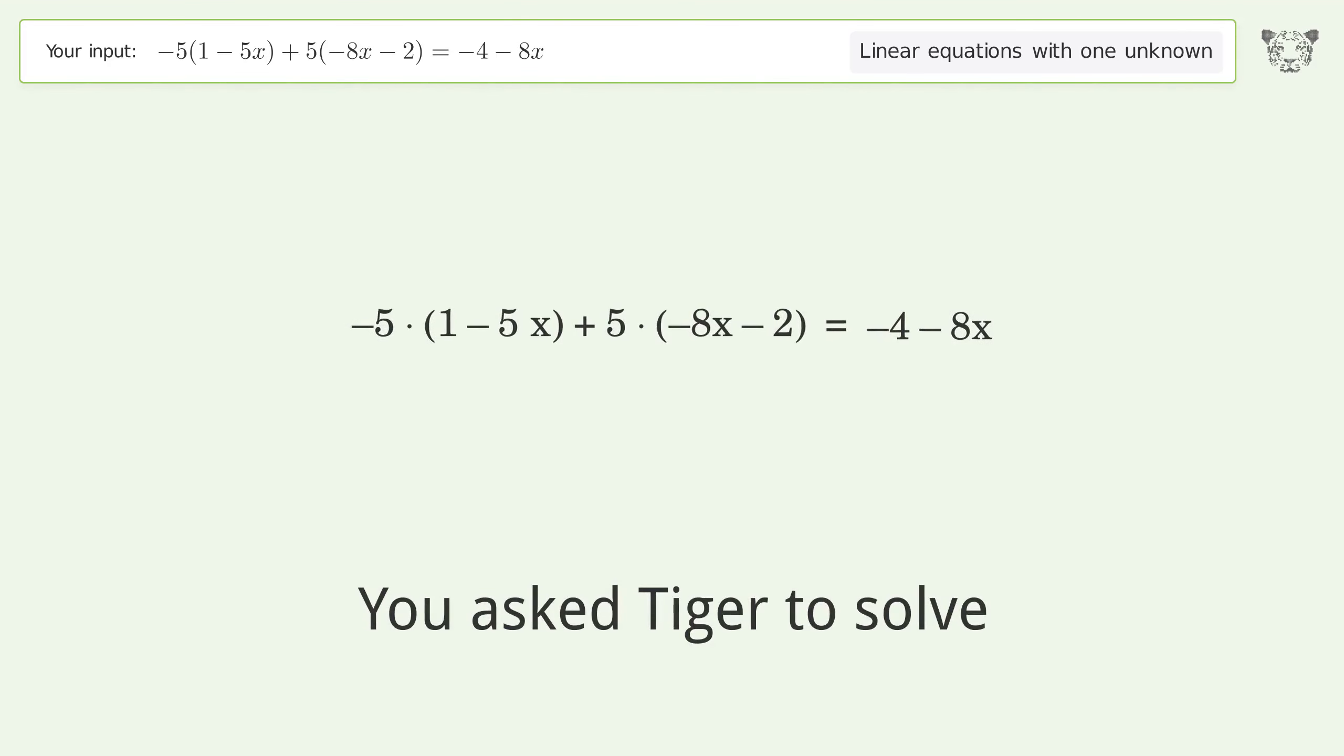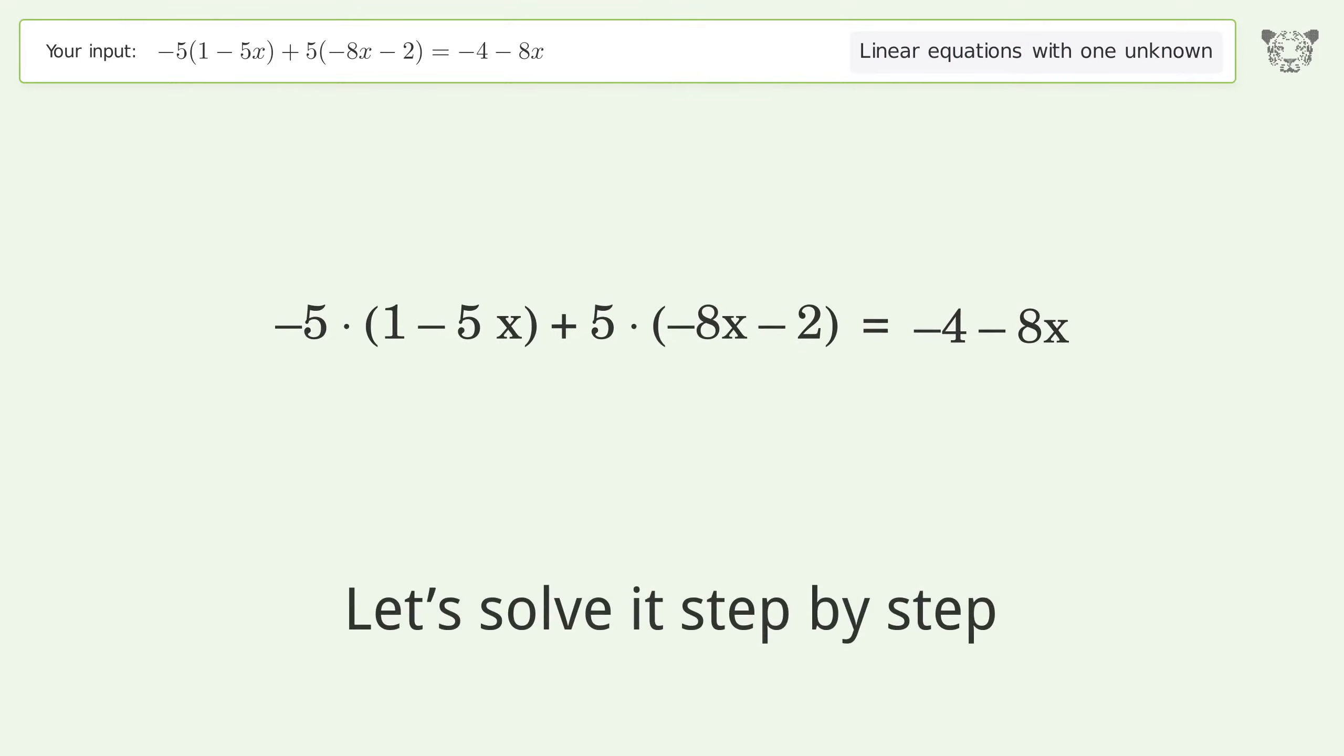You asked Tiger to solve this, which deals with linear equations with one unknown. The final result is x equals negative 11 over 7. Let's solve it step by step.